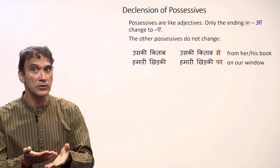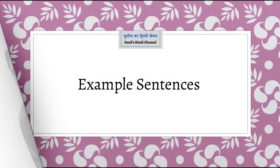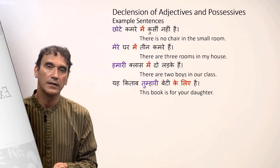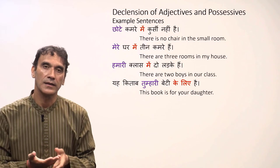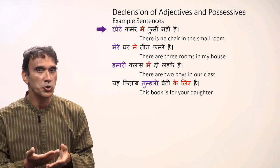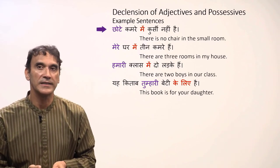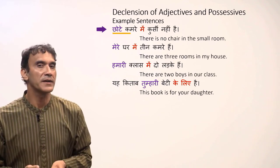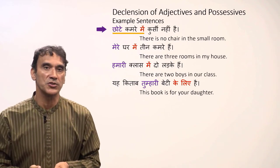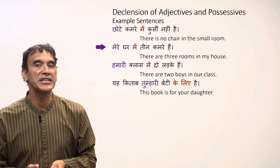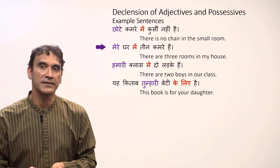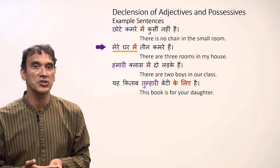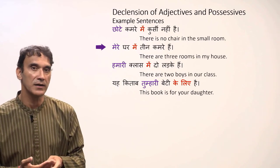Let's take some example sentences. 'Chhote kamre mein kursi nahi hai' — there is no chair in the small room. So 'chhota kamra' becomes 'chhote kamre mein' with the postposition. 'Mere ghar mein teen kamre hain' — there are three rooms in my house. Again, 'mera' becomes 'mere' with the postposition: 'mere ghar mein.'